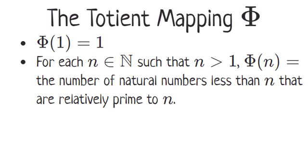To address Ron's question, although one is not less than itself, it is relatively prime to itself, being the only such natural number that has that property. And since we'll find it convenient for Phi of one to have a value, one seems a good choice.